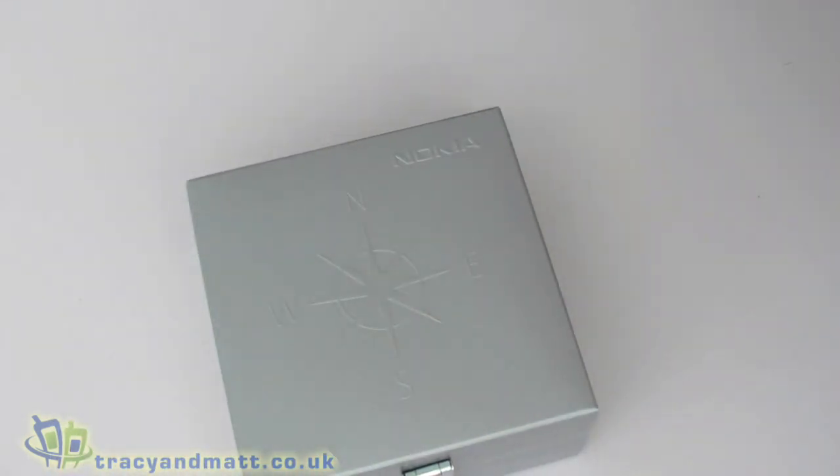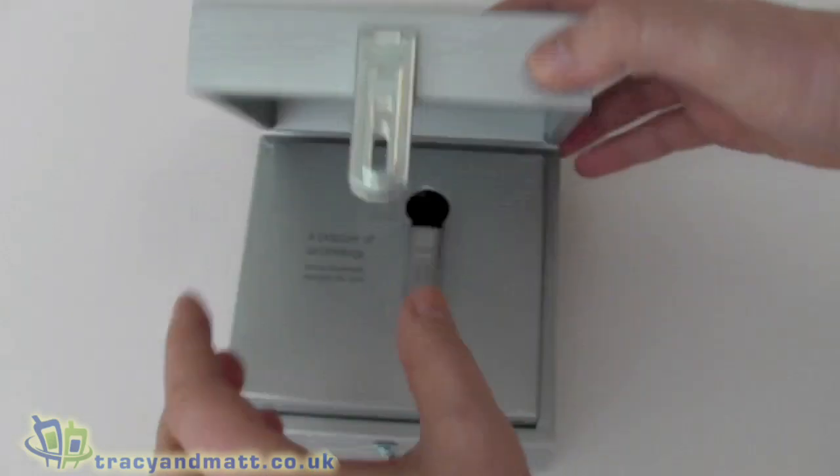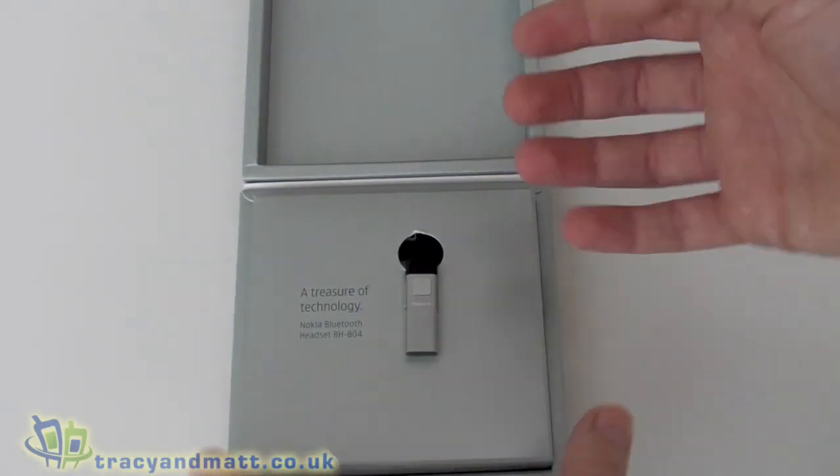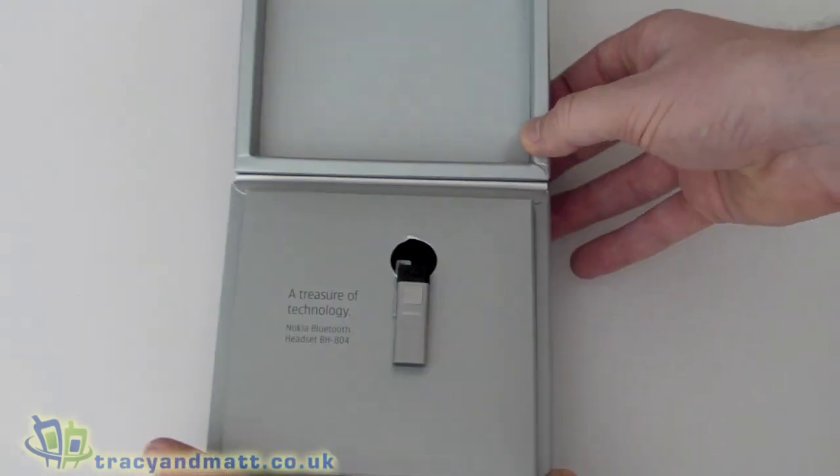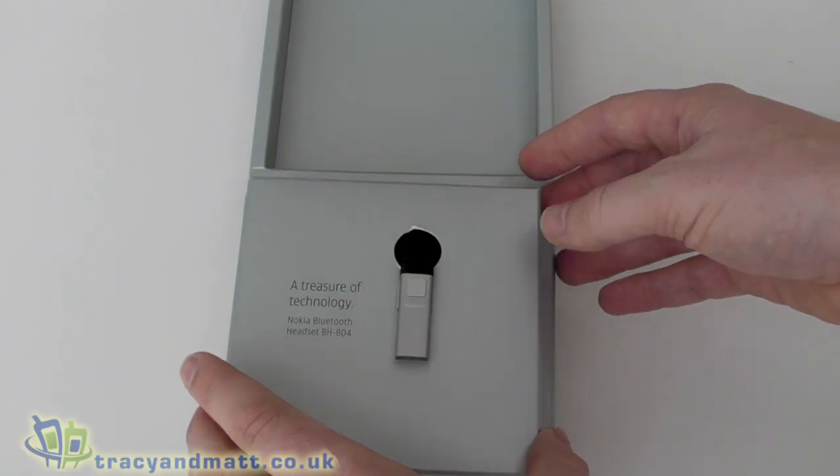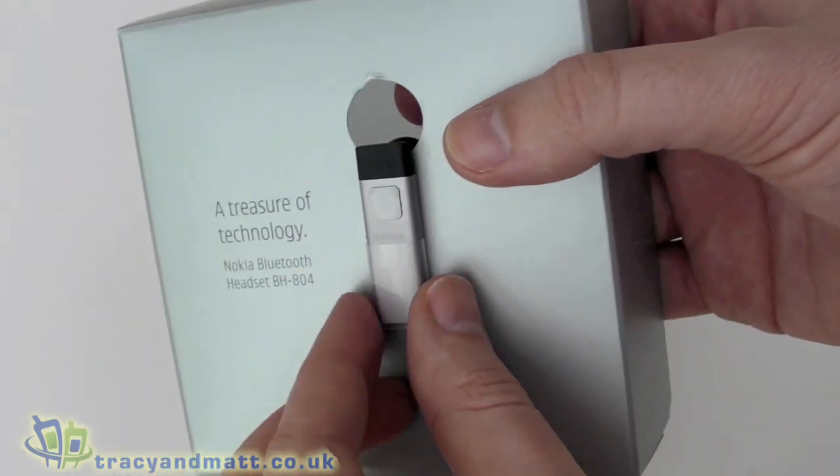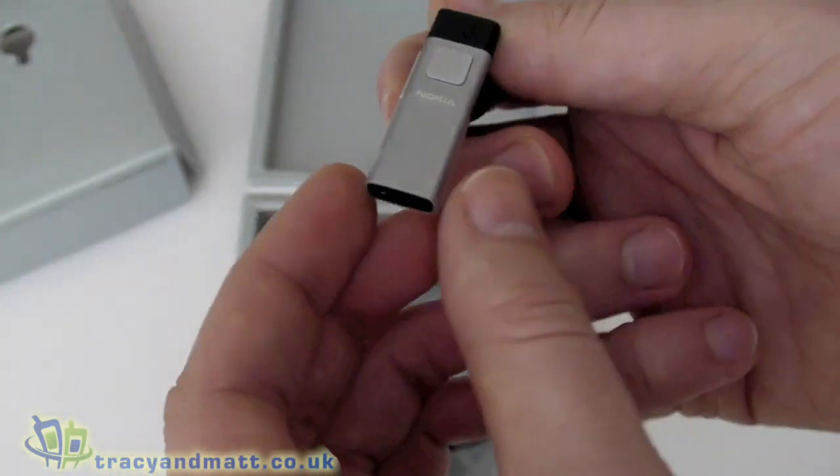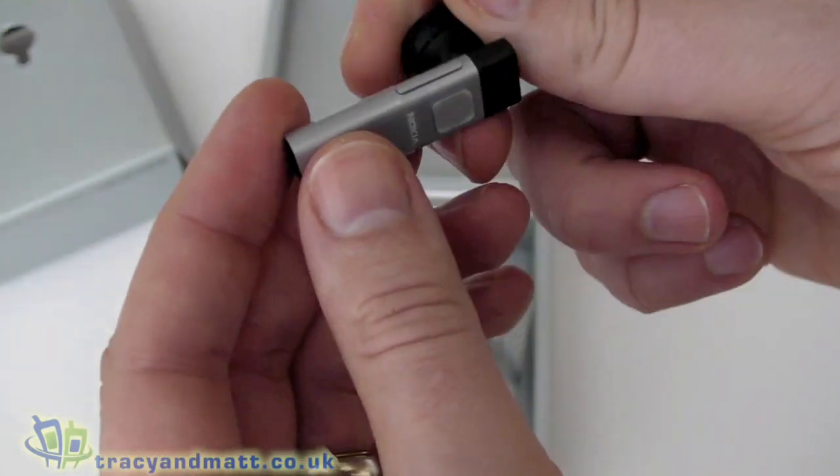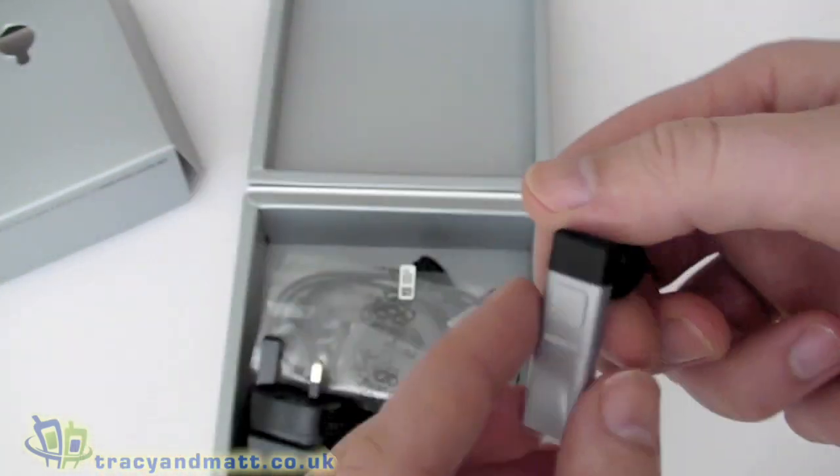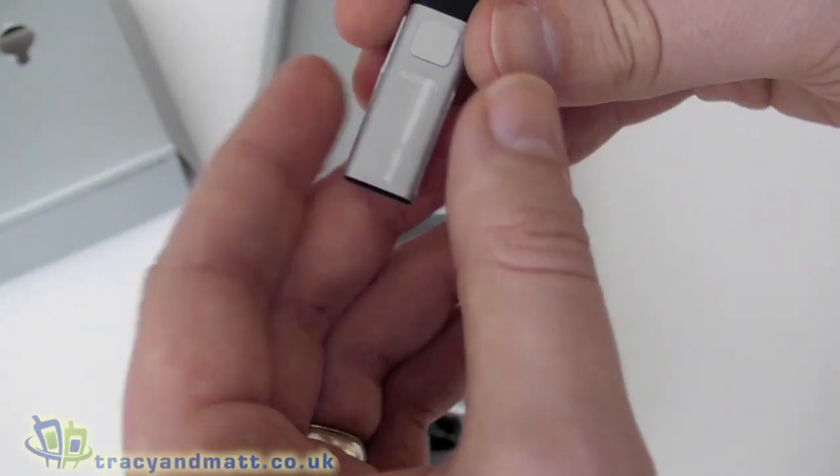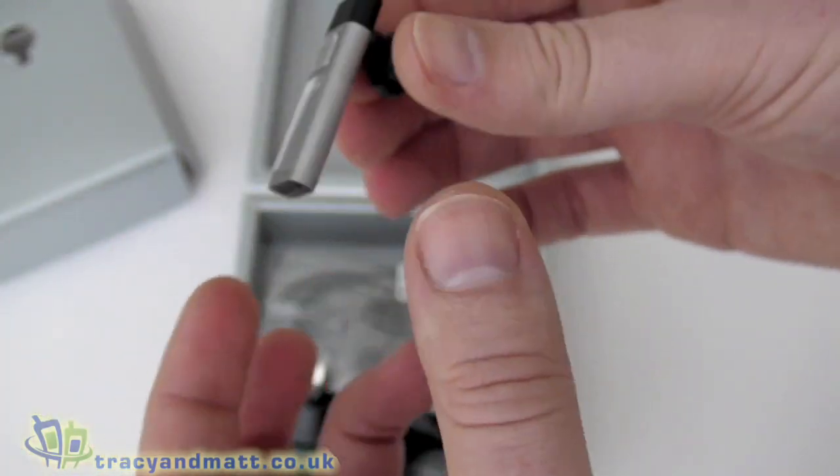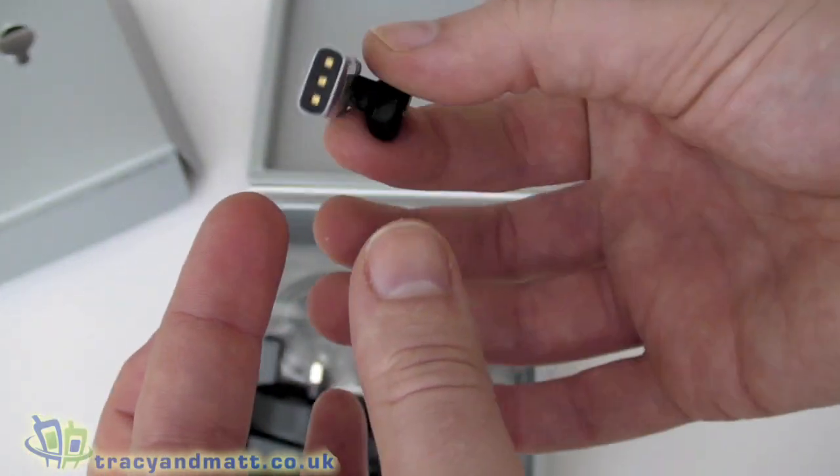Inside, right on top and really nicely presented, is the headset itself. This is the BH-804, and it has to be, I must say, one of the smallest Bluetooth headsets I've ever come across. It simply sits in your ear. There's no over-the-ear loop or anything like that—it's small enough and light enough to physically sit in your ear. On the outside, we've got a couple of buttons.